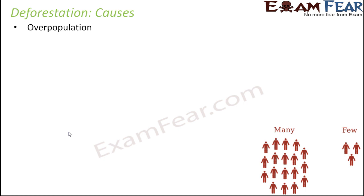Now why do human beings do that? Because of overpopulation — the population is increasing very rapidly. When the population increases, the demands of the people also increase. So earlier if you had three people, the needs for food, shelter, and clothing will also be less. But when the number increases to 30, the demand of 30 people will also increase.